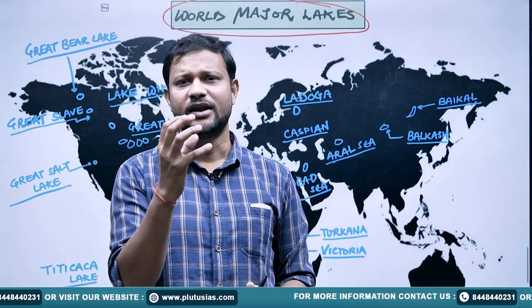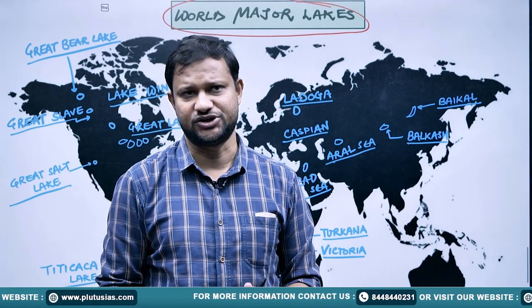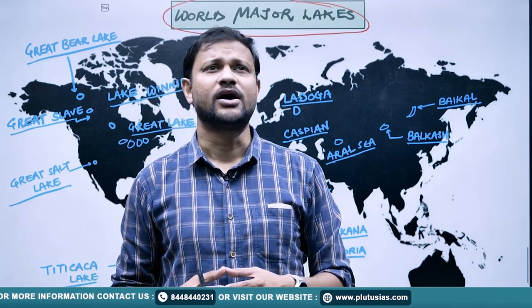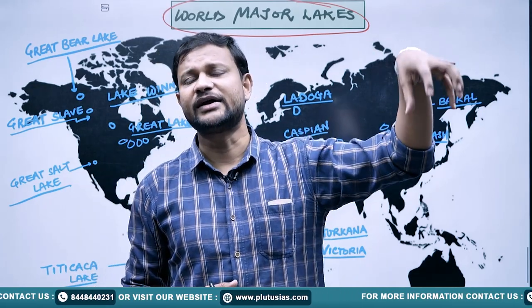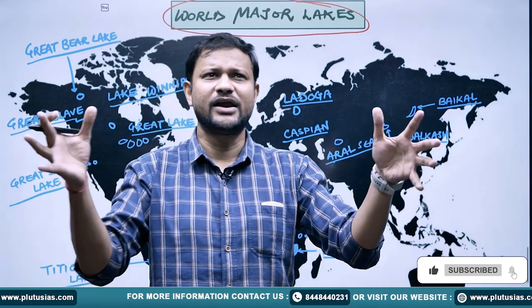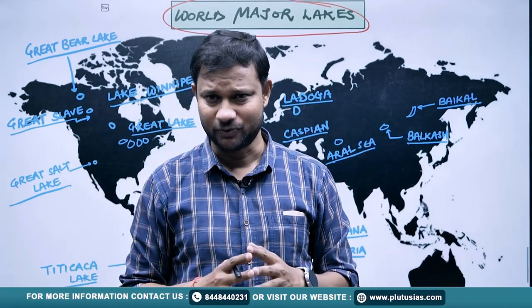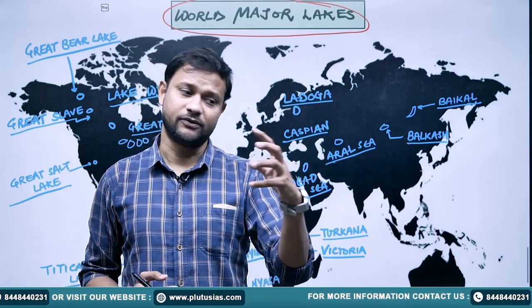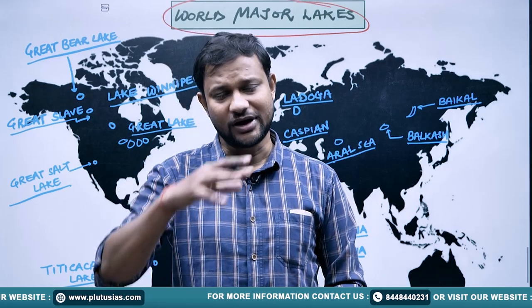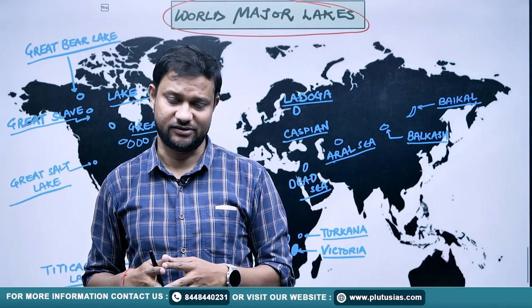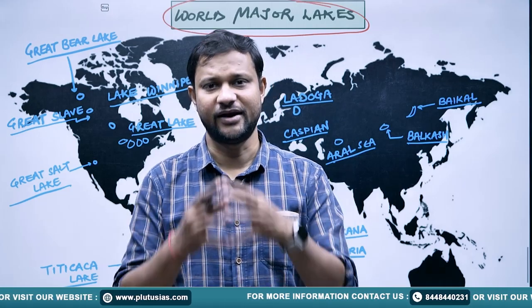A lake is simply a depression — possibly large scale, it depends on size — that lies on the continental surface of the earth. Lakes are comparatively smaller in size, though not necessarily. There is still a dispute about whether bodies like the Caspian Sea, Dead Sea, or Aral Sea are really lakes or seas. A lake is simply a water body lying on the continental surface.